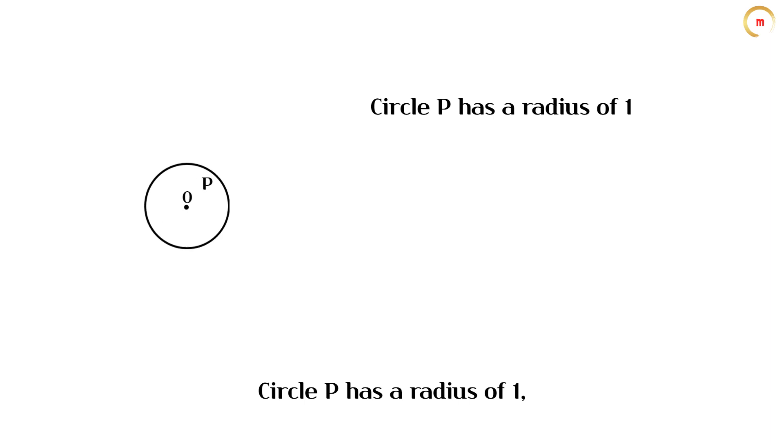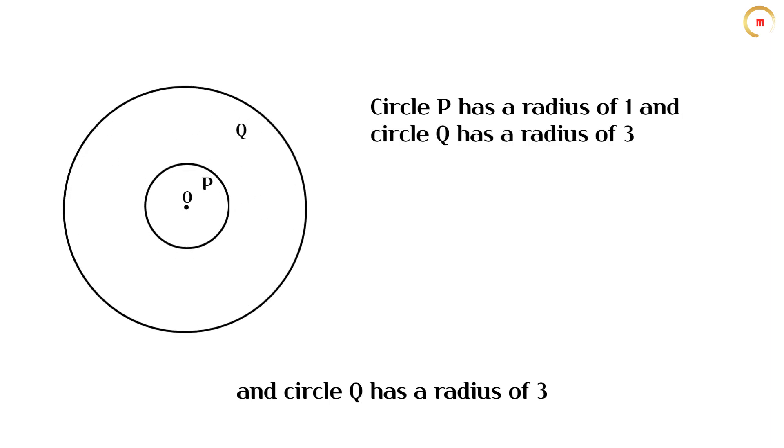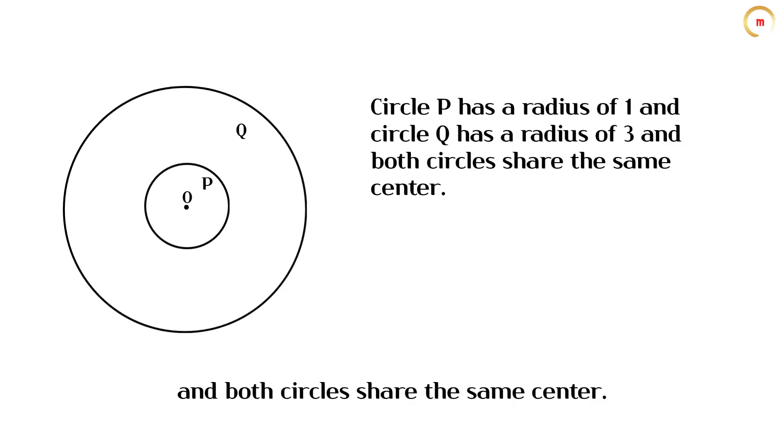Circle P has a radius of 1, and circle Q has a radius of 3, and both circles share the same center.